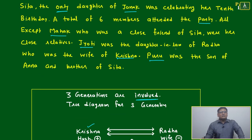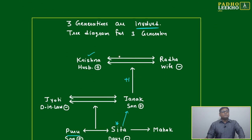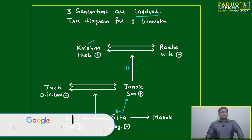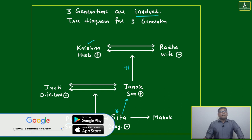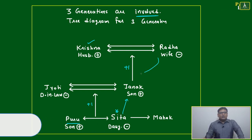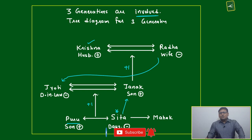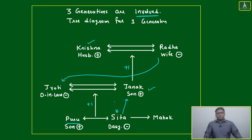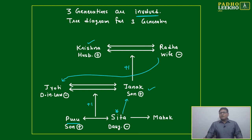Jyoti was the daughter-in-law of Radha, who was the wife of Krishna. Puru was the son of Anna and brother of Sita. From these clues, Radha's husband is Krishna. The son of Radha and Krishna will be Janak — only then will Jyoti be his daughter-in-law. And the son and daughter of Janak will be Sita and Puru.